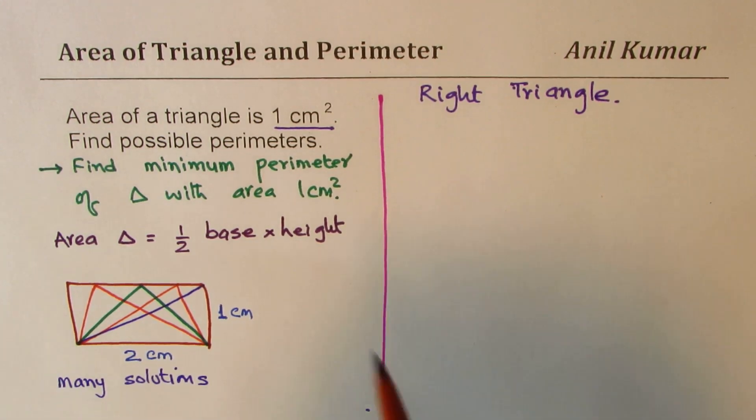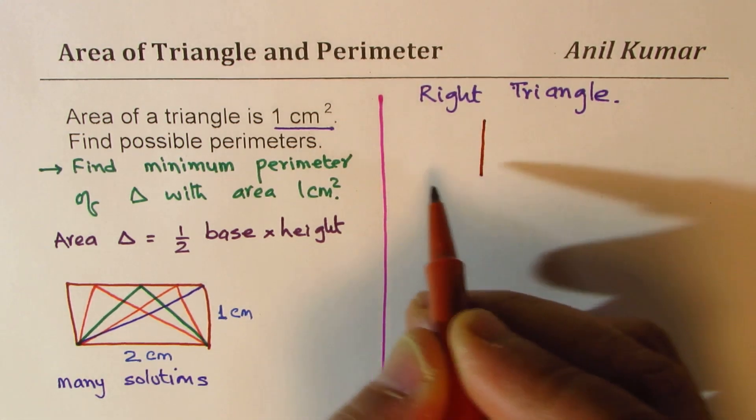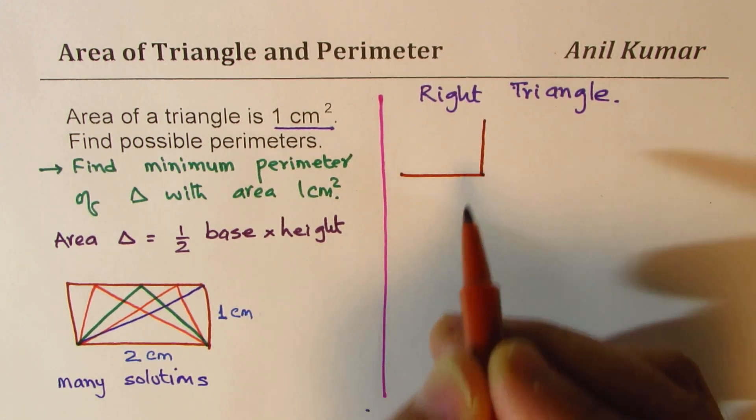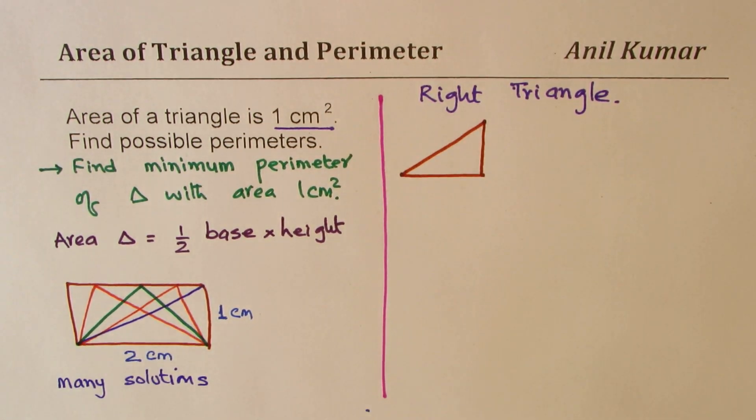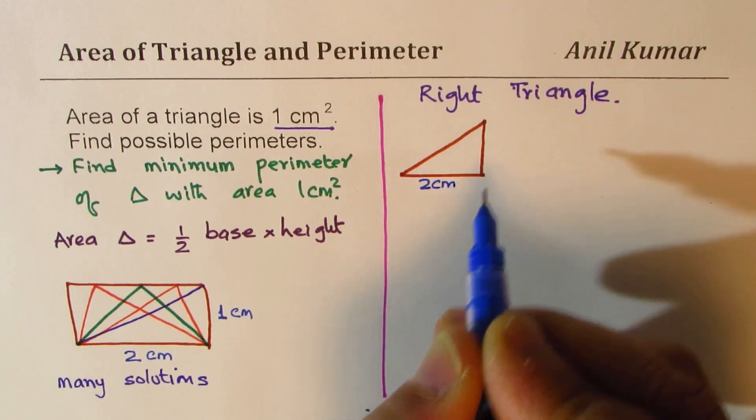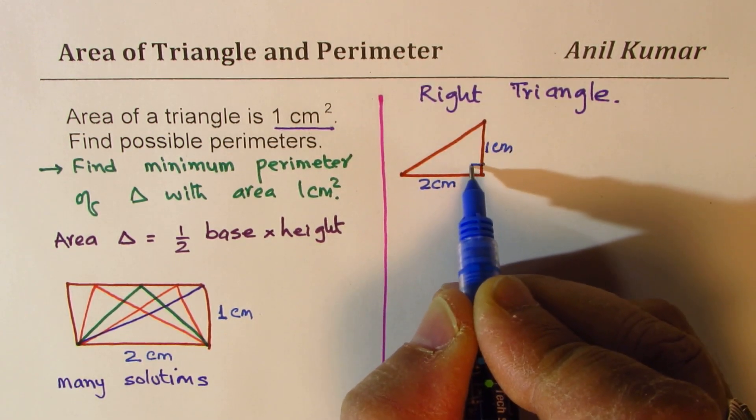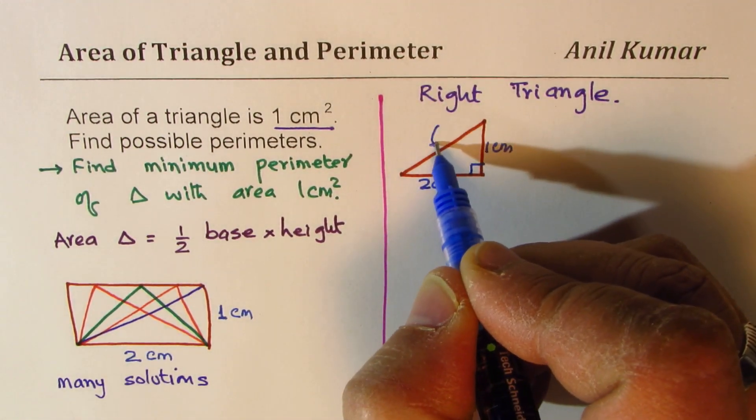Let's take two cases. One: A right triangle like this shown here. So we have one right triangle whose height is one centimeter and base is two centimeters. It is a right triangle.